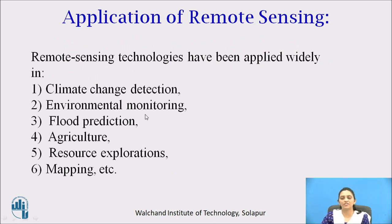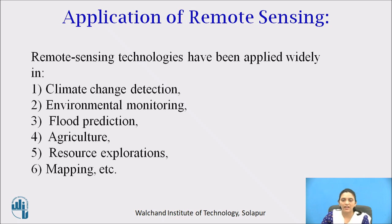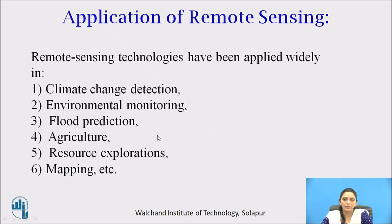Now we will see the applications of remote sensing. Remote sensing is widely used in all fields. Remote sensing technologies have been applied widely in climate change detection, environmental monitoring, flood prediction, agriculture, resource exploration, mapping, and more. Whenever there are changes in climate, they are captured by the sensor and delivered to the ground source for analysis. Flood prediction and map development are also commonly done using remote sensing — its vision is far beyond human vision.